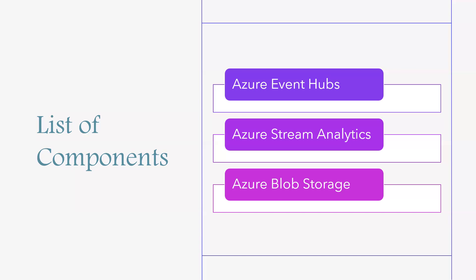Now let's talk about Azure Blob Storage. This storage helps us store massive amounts of unstructured and semi-structured data. In this real-time fraud detection scenario, Blob Storage is used to store the results of the Stream Analytics job.